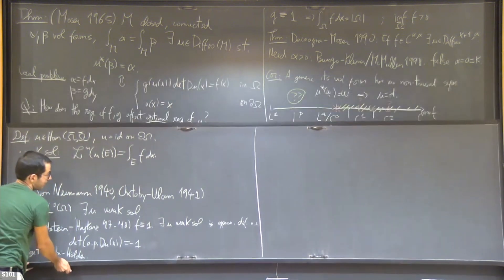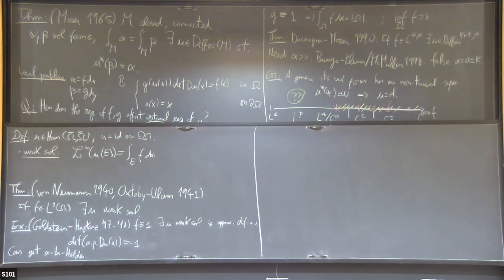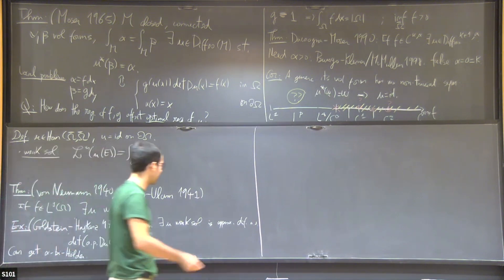Actually not just that, they can even get alpha bi-Holder examples. So this means for arbitrary alpha. You can even ask U to be alpha Holder continuous and the inverse of U to be alpha Holder continuous. You may not have any proper differentiability, but in this measure theoretic sense, it does. And it's very, very wild. Maybe we don't actually want to look at these maps.